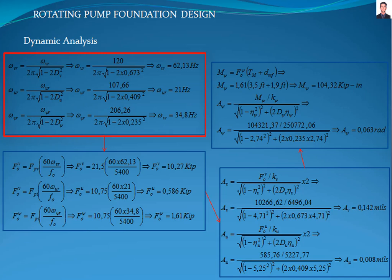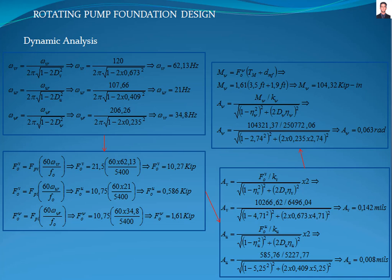Now we proceed to calculate the unbalanced force with these equations, where omega-VN, omega-UN, and omega-psi-N are the vertical, horizontal and rocking natural frequencies. F0 is the operating speed, and FPV and FPI are the vertical and horizontal pseudo-dynamic forces, giving results of 10.27, 0.586, and 1.61 kilopounds respectively.